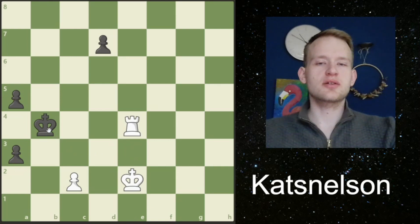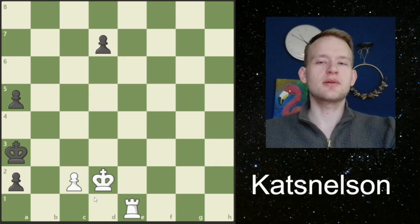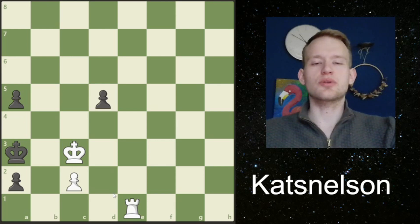If we give a check here, the black king is just moving forward. If we try to bring our own king, there is a2, rook to e1, and king to a3. Also in this position, black is not going to lose.